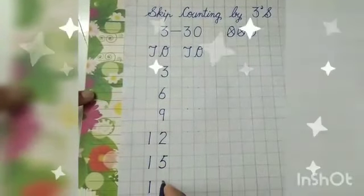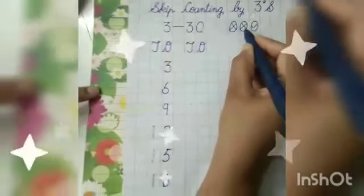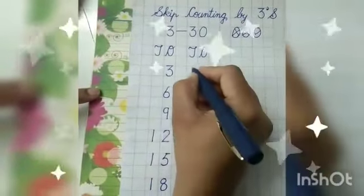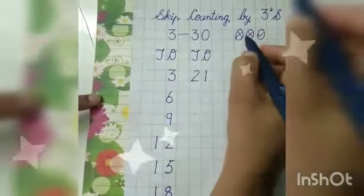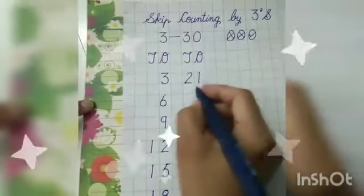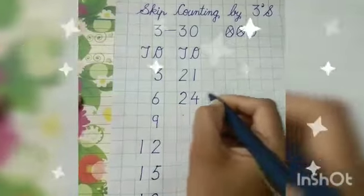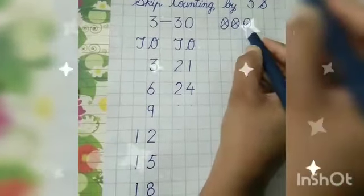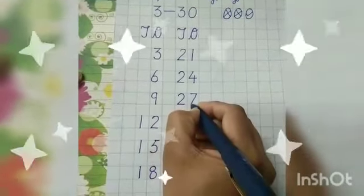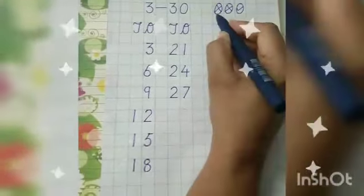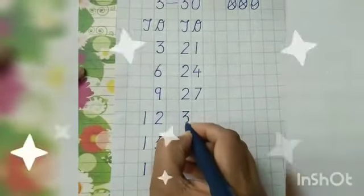This ladoo also has a tick option, so we will write 18. Then 19, 20, 21 — we will write 21. Then 22, 23, 24 — we will write 24. Then 25, 26, 27 — we will write 27. Then 28, 29, 30 — we will write 30.